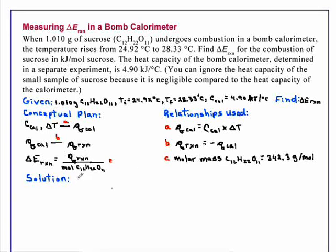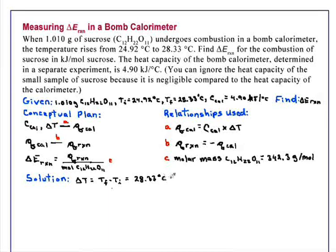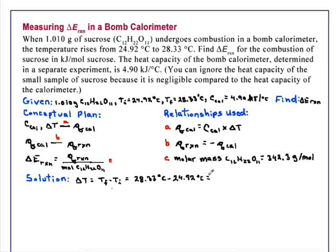So in our solution, we will first calculate the change in temperature, which is the final temperature minus the initial temperature, which is equal to 28.33 degrees C minus 24.92 degrees C, which is a temperature change of 3.41 degrees C.